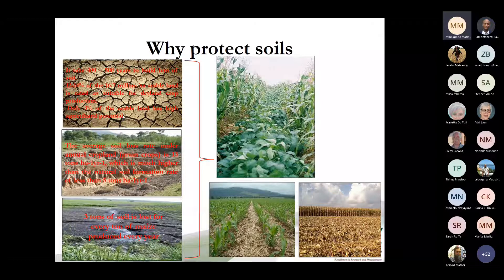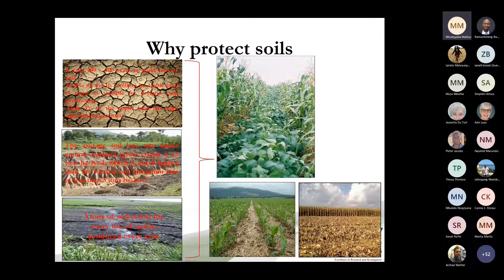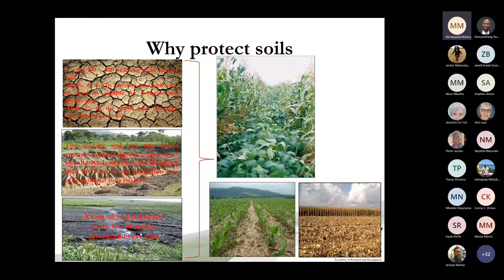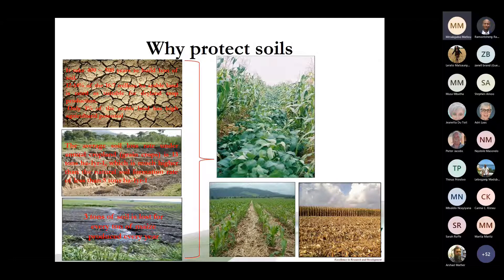By high agricultural potential I mean the soil quality indicators are higher — for example, the soil depth is very high and it doesn't have a shallow soil profile. Some of the pictures here are familiar; the middle one was taken in the Eastern Cape where there is a lot of erosion. It has been estimated that about three tons of soil is lost for every ton of maize produced, especially in cropping fields where conventional tillage is practiced. Conventional tillage is where you plough and loosen the soil, and then when it rains or if there is wind, most of that soil is lost.